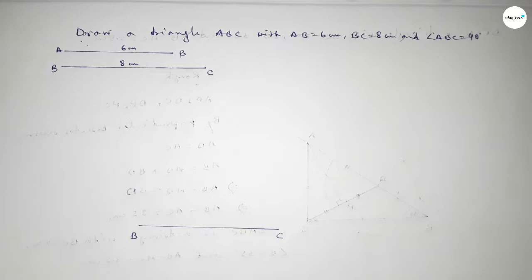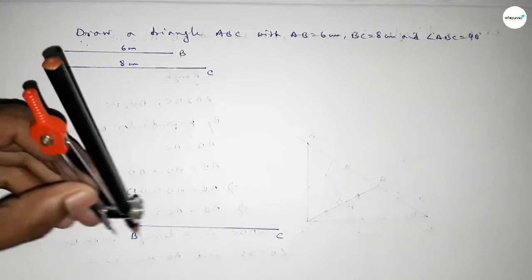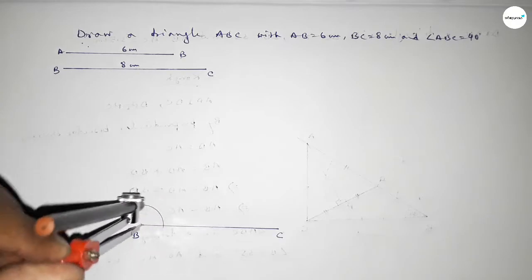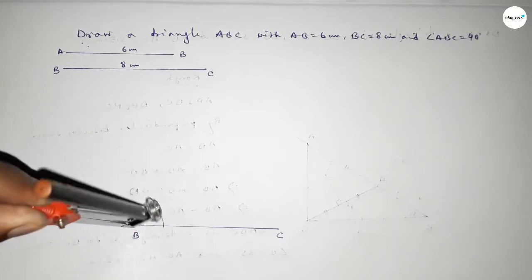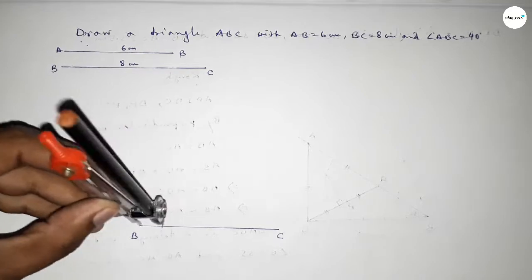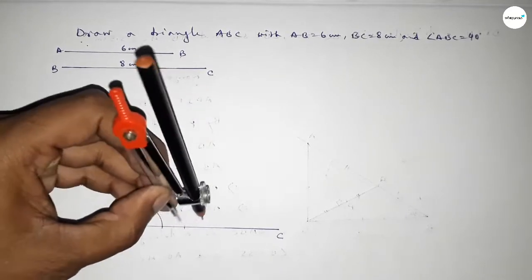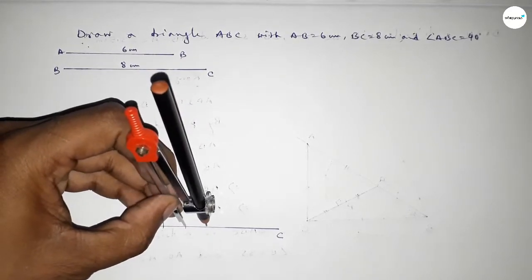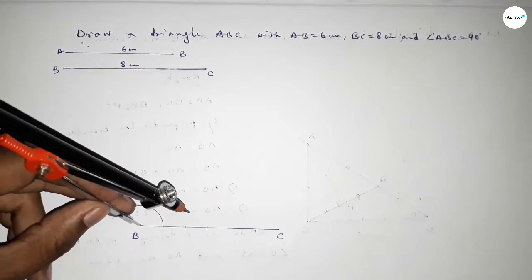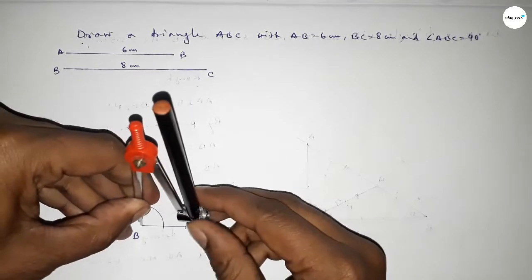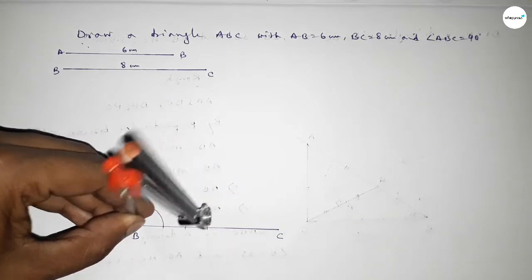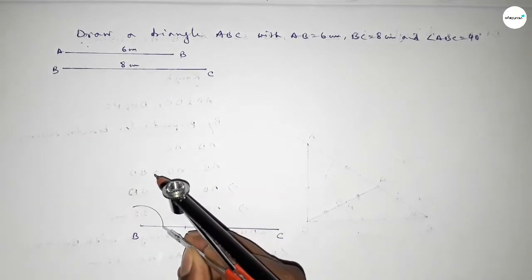Now we have to first draw an 80 degree angle on the point B. Putting the compass on point B and drawing an arc, then putting the compass here and cutting here with the same length. Then bringing the compass here and cutting here.